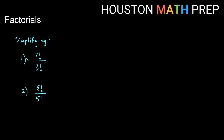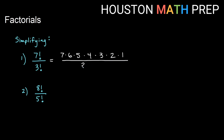So let's go ahead and simplify these. Here we have seven factorial on the top and three factorial on the bottom — seven factorial divided by three factorial. On the top I would have seven times six times five times four times three times two times one, and on the bottom just three times two times one. The matching three times two times one reduces, leaving us with seven times six times five times four, which gives us 840.